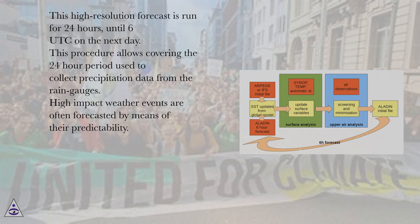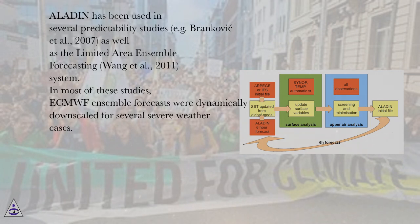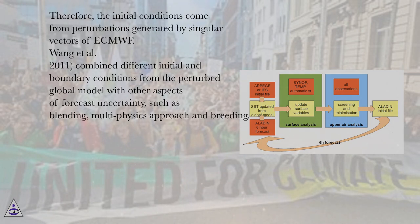High-impact weather events are often forecasted by means of their predictability. ALADIN has been used in several predictability studies (e.g., Brankovic et al., 2007), as well as in the limited-area ensemble forecasting system (Wang et al., 2011). In most of these studies, ECMWF ensemble forecasts were dynamically downscaled for several severe weather cases. The initial conditions come from perturbations generated by singular vectors of the ECMWF model. Wang et al. (2011) combine different initial and boundary conditions from the perturbed global model with other aspects of forecast uncertainty, such as blending, multiphysics approach, and breeding.